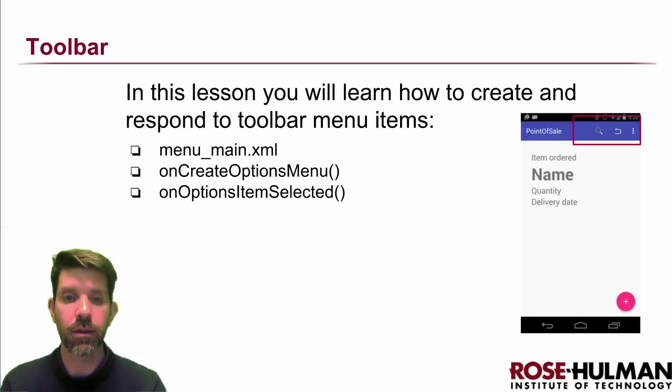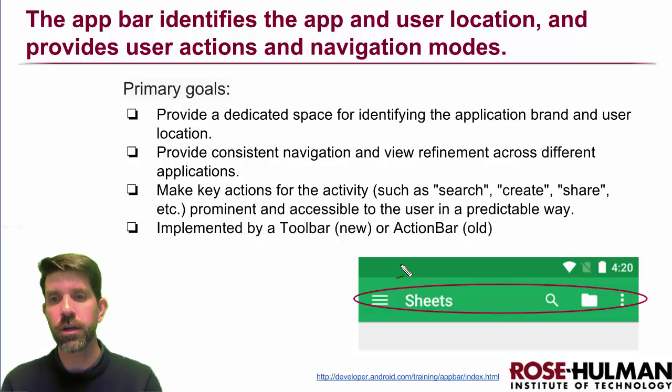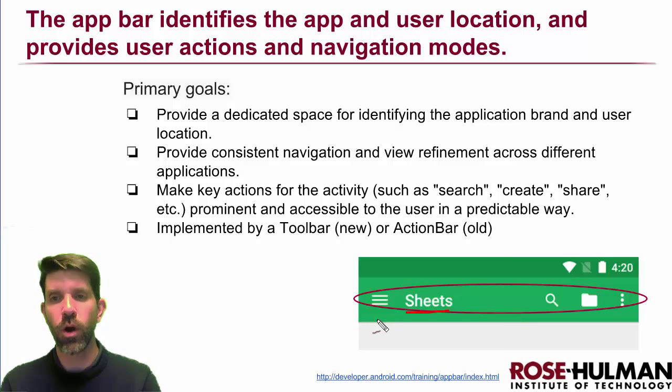Right now the only thing I have in my app is just the little overflow menu for settings. So first, a little bit of background: what we're actually looking at the top of the screen is called the app bar. Here's an example for Google Sheets — you've seen these before. Google is using them pretty widely, not just in Android but also in their web stuff.